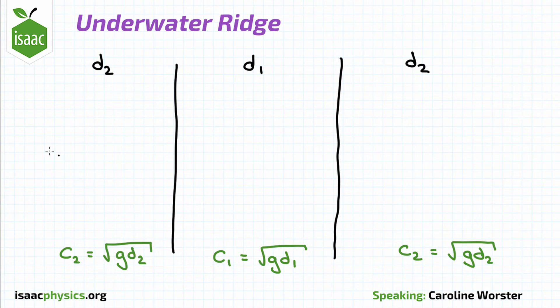Note that as there are two different speeds, the waves are refracted as they travel over the edge of the ridge, so we draw in the normals to the surfaces.